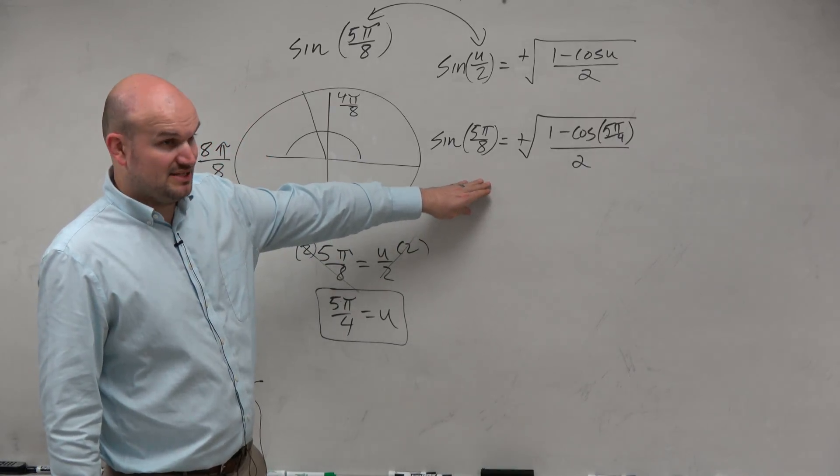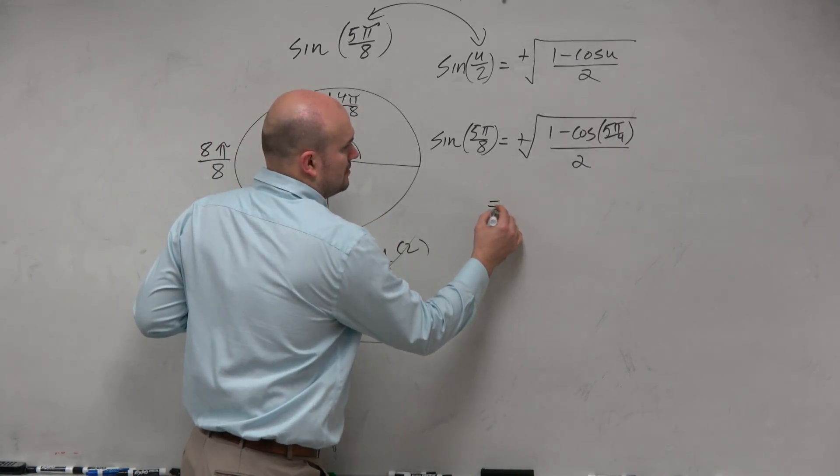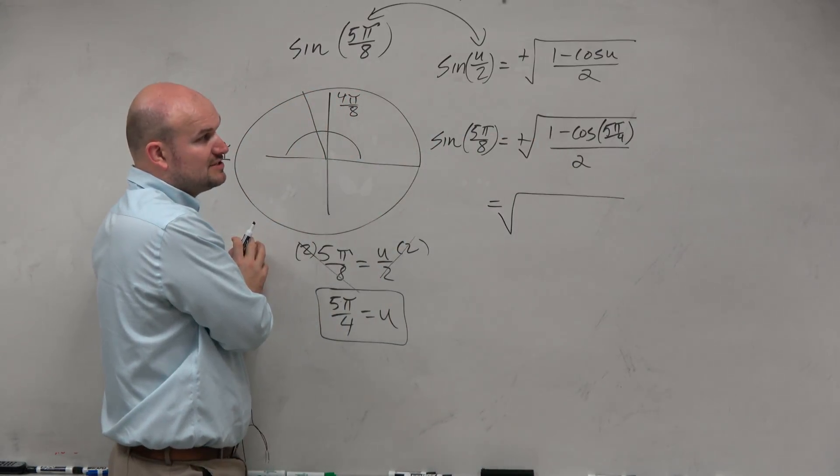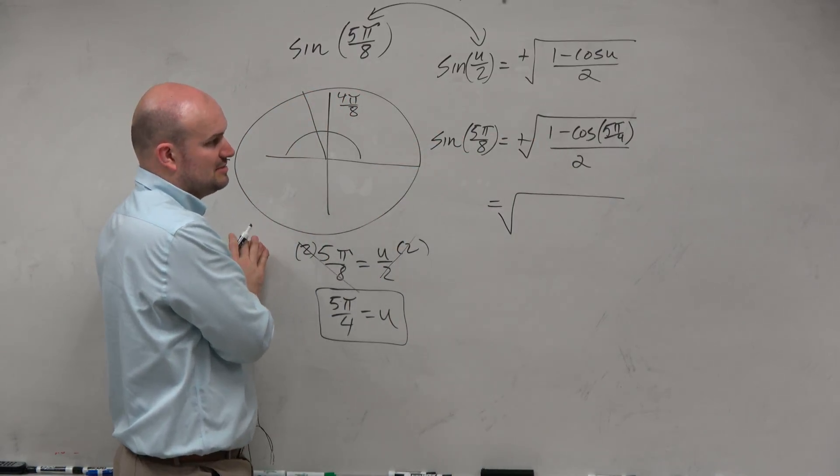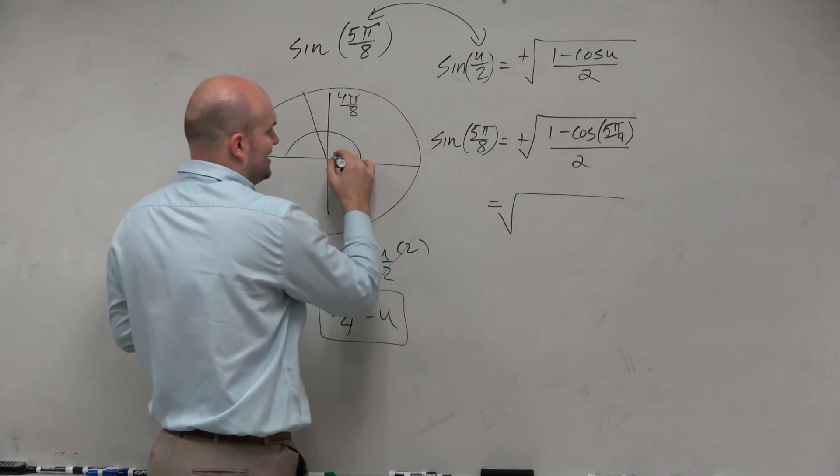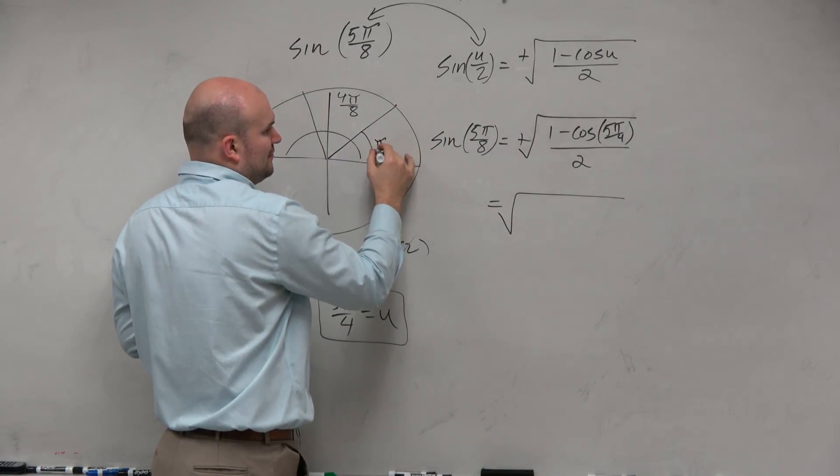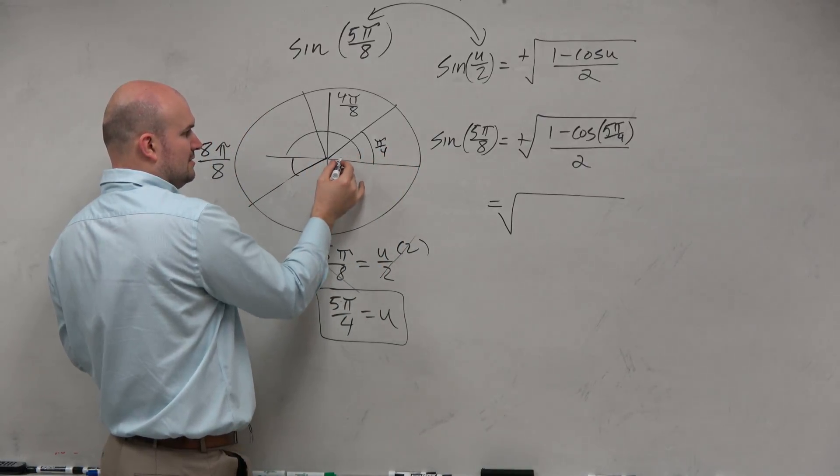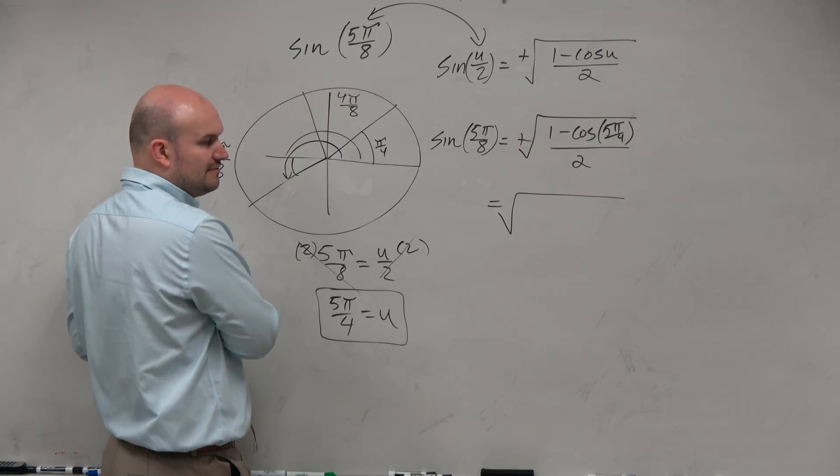Now, it just comes into basic simplifying the problem. And again, there's really not much we can simplify outside of it. So let's go inside the radical. Cosine of 5π over 4, that has a reference angle of π over 4. 5π over 4 is going to be down here. So we've got to think, what is the cosine of that 5π over 4? It's in the third quadrant, so it should be...